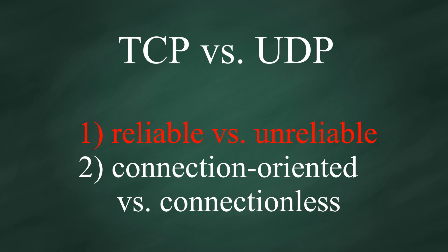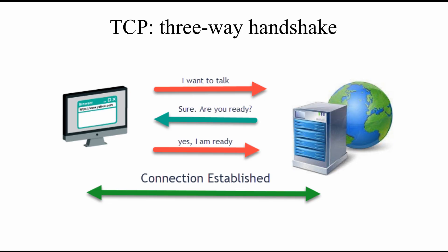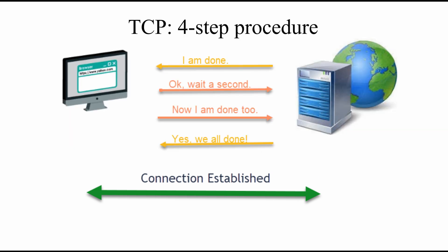Therefore, UDP is not reliable. The second difference is TCP is connection-oriented, while UDP is connectionless. TCP uses a 3-way handshake to make sure the connection is established before data transmission. After data is delivered, TCP will follow a 4-step procedure to make sure every bit of data is delivered and received before closing the connection.